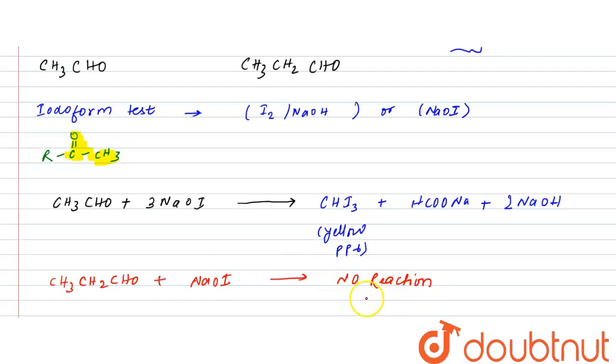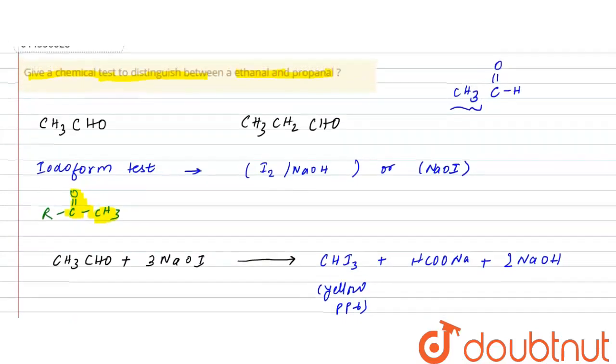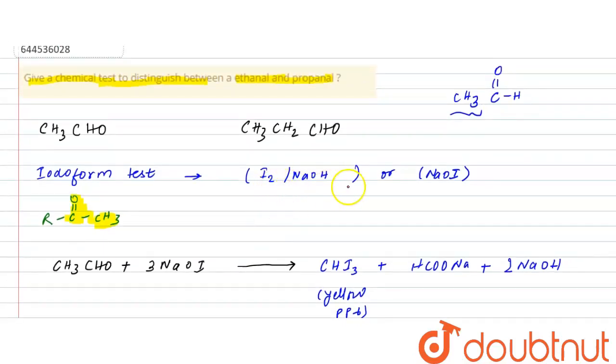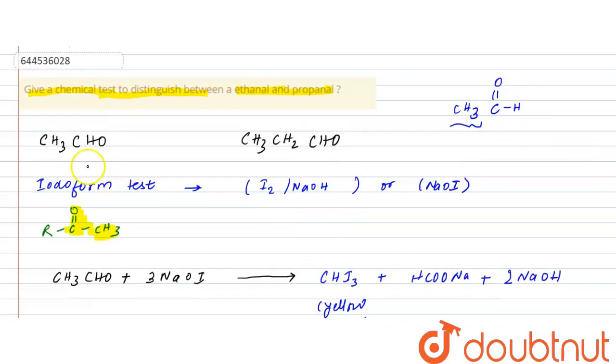Simply there will be no reaction because it does not have any keto methyl group. As I told you, for iodoform test there must be a presence of keto methyl group in order to give the positive iodoform test. So finally you can see yellow ppt will be obtained in case of ethanol, but there will be no reaction in case of propanol with this iodoform reagent I2 NaOH.